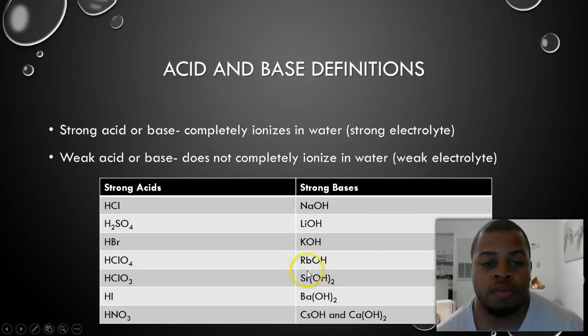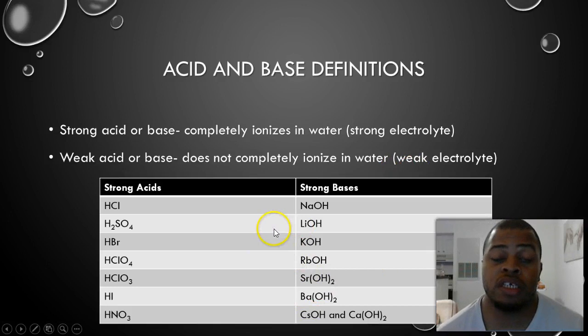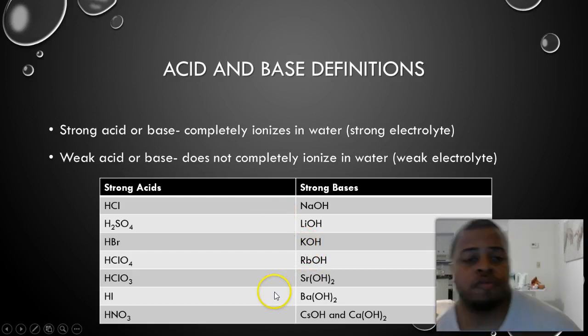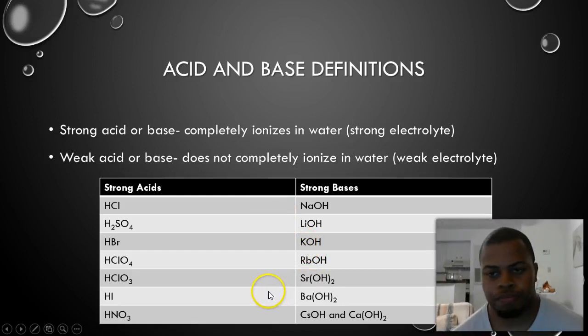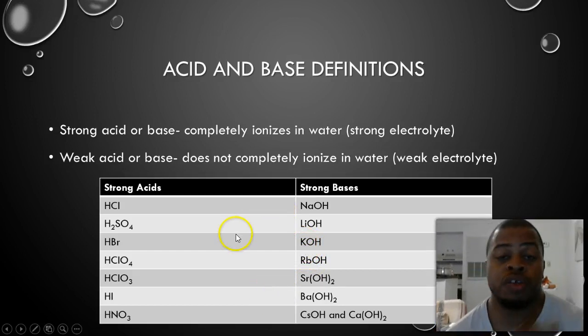Now, a list of the strong acids and strong bases are listed here below for you. You need to memorize these. Why do you need to memorize them? Because outside of these, all the other acids or bases are weak. Okay? So if you see HF or acetic acid or all these different things, those are all going to be weak acids. These will be the only strong ones.